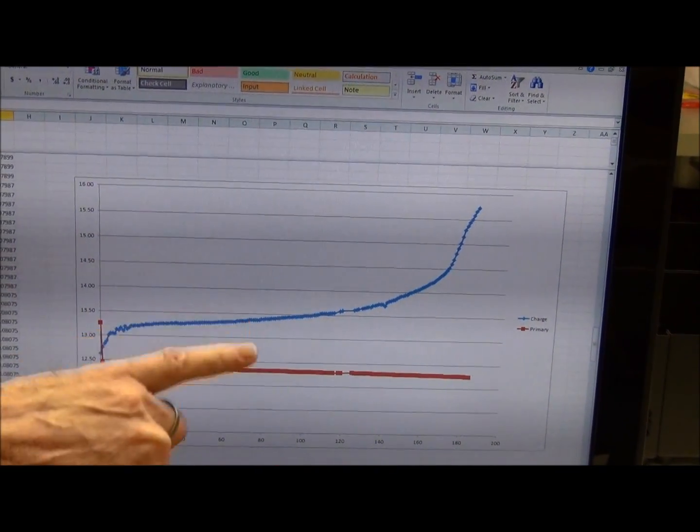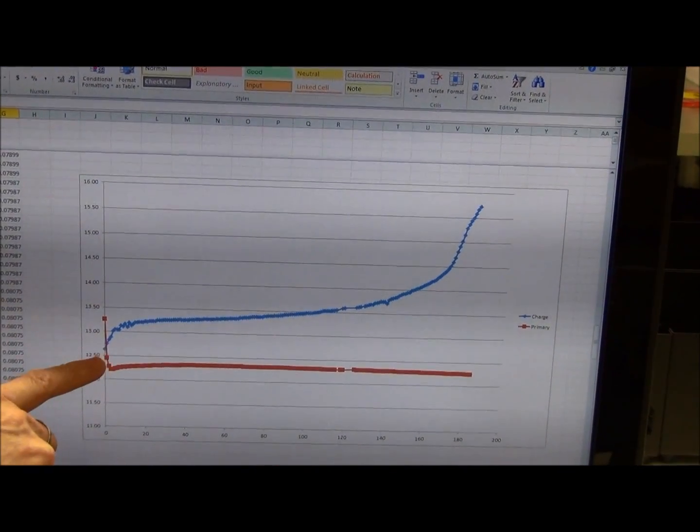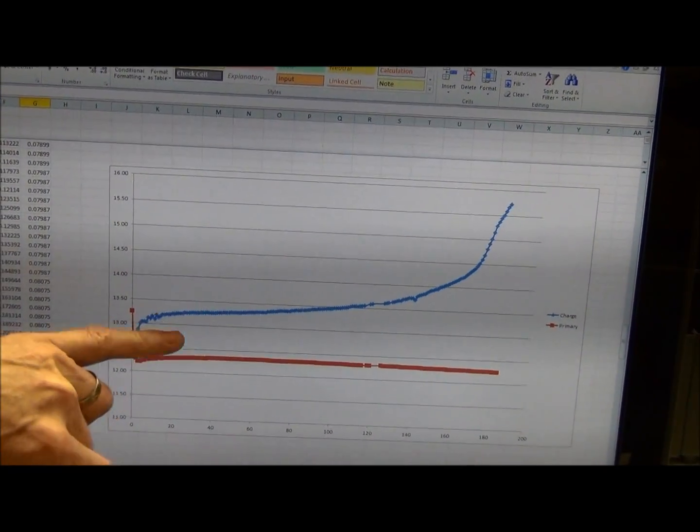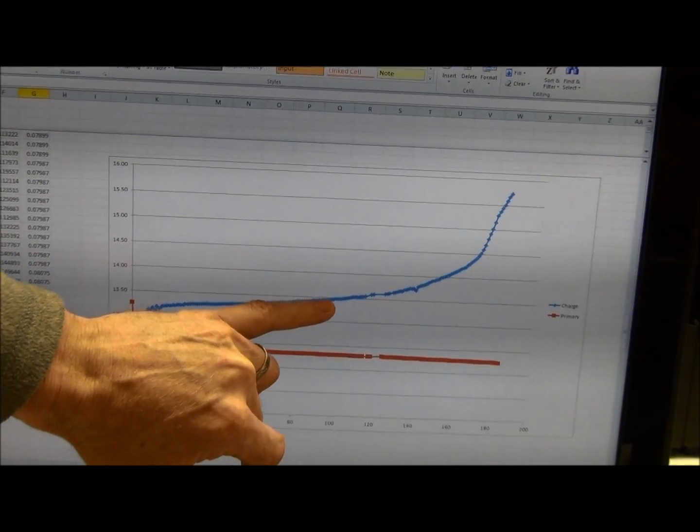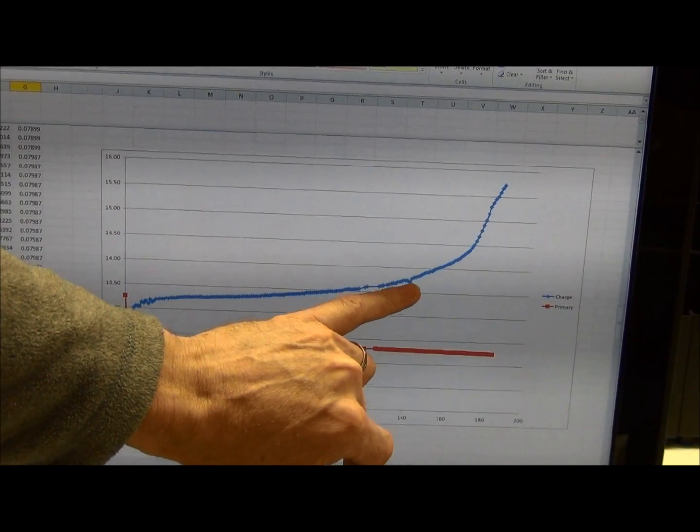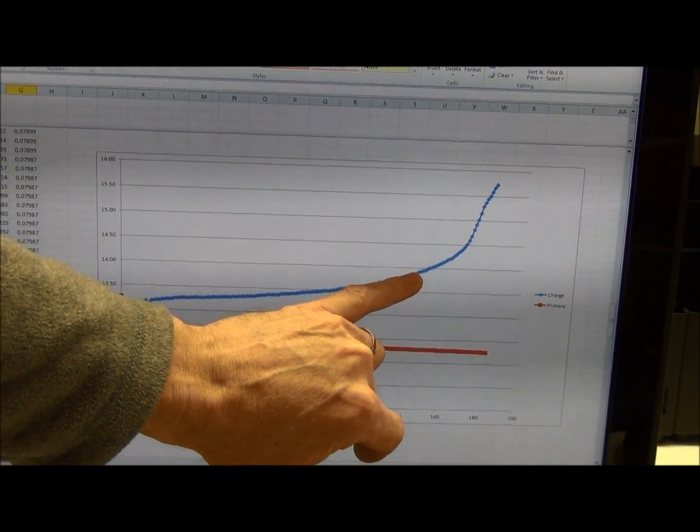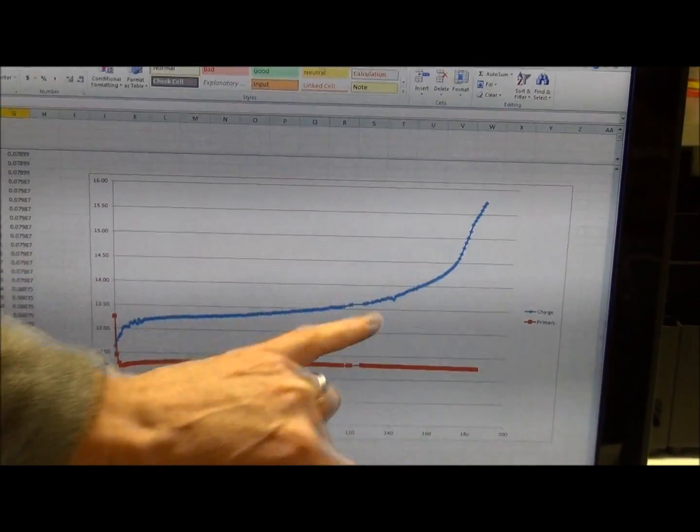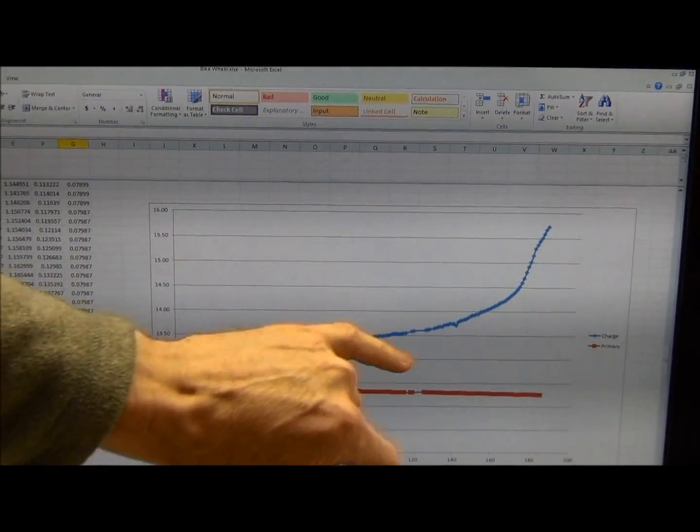The blue line is our charge battery. We started at 12.63, initially started off pretty fast, and then we had this long flat period. And then we get to about 14 volts, and it just takes right off, and it's currently at 15.7.